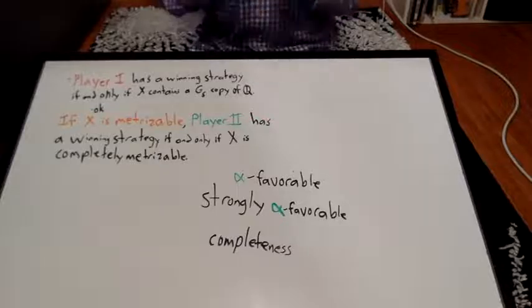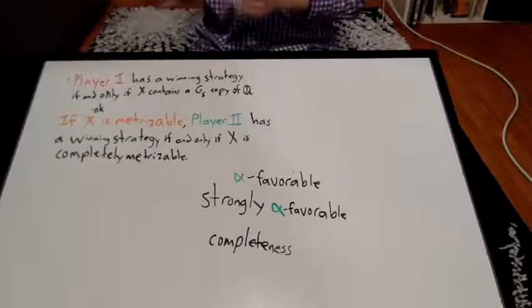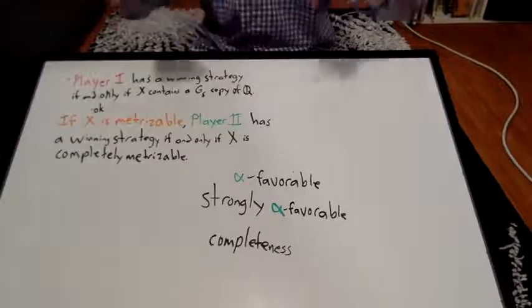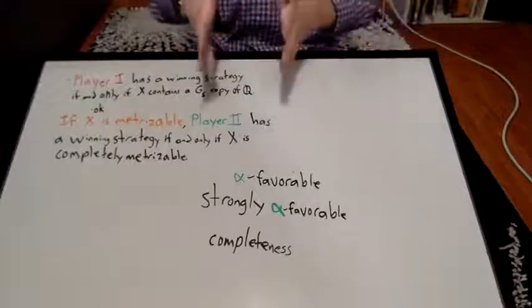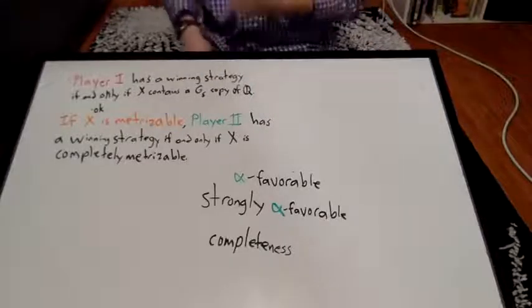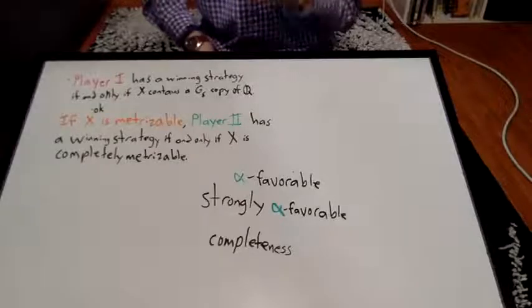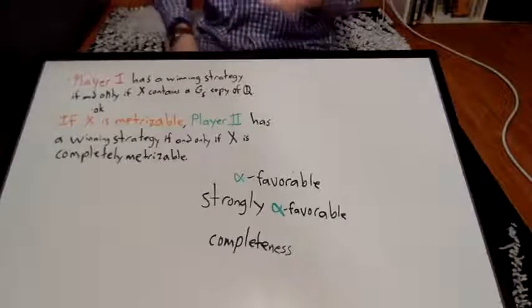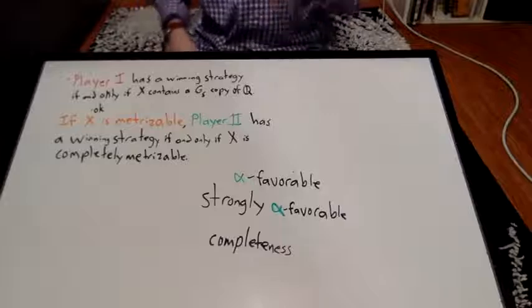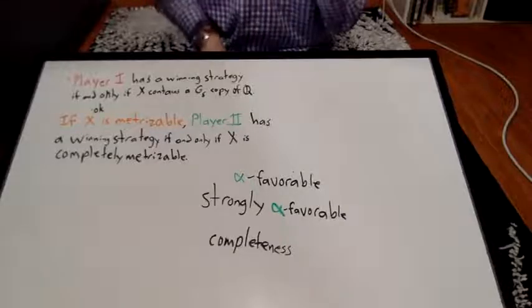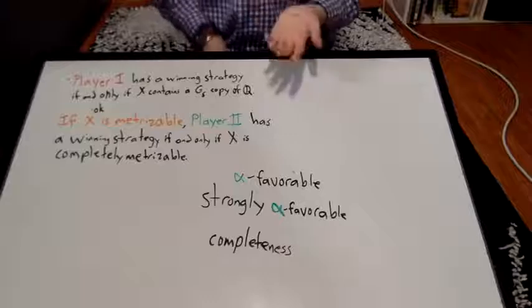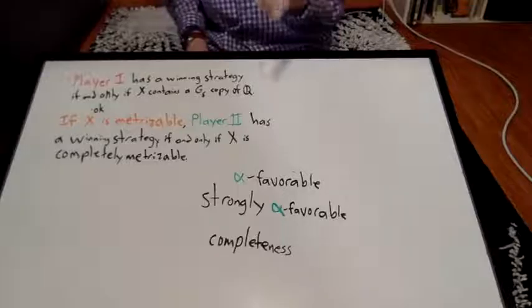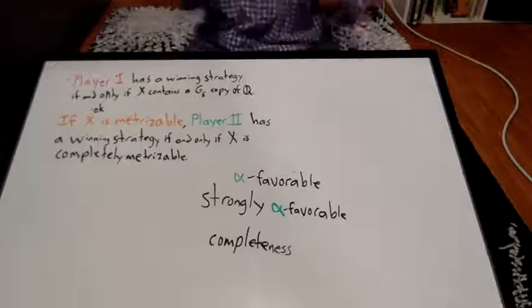And the Ulam game, you choose binary digits each turn, and then if that sequence of binary digits is in a certain space called the Baire space, not a Baire space, the Baire space, then a certain player wins. And whether or not that game is determined or not actually depends on whether or not you take the axiom of choice. In fact, you can actually take it as an axiom of set theory, the axiom of determinacy, whether or not this Ulam game is determined or not. If you're wondering, the axiom of determinacy contradicts the axiom of choice, so you can't pick both.